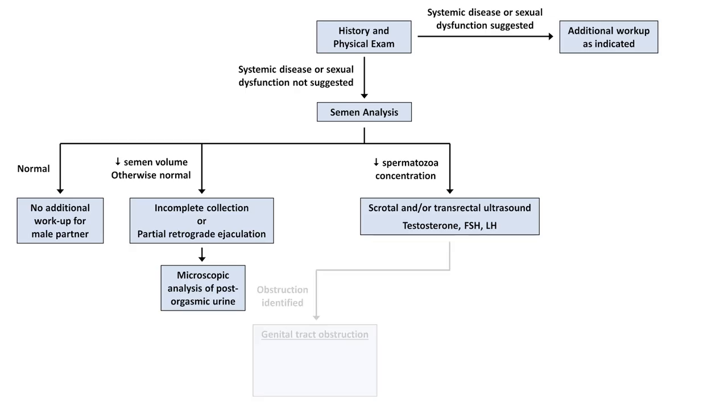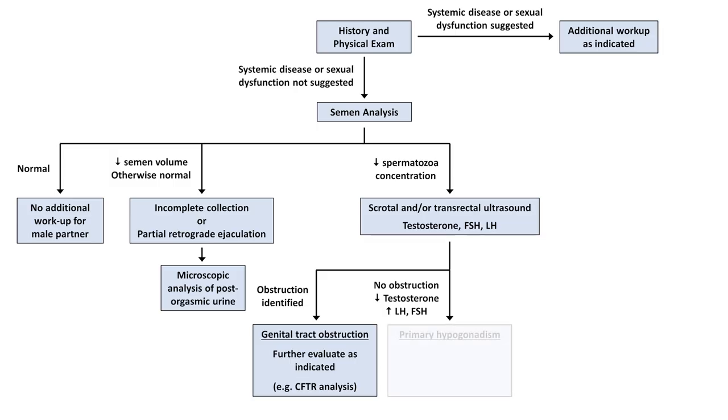If imaging finds genital tract obstruction, further evaluate as indicated. If there is no obstruction, testosterone is low, and LH and FSH are high, it is consistent with primary hypogonadism. In this case, the next step is karyotype, and if sperm concentration is extremely low, Y-chromosome microdeletion analysis.